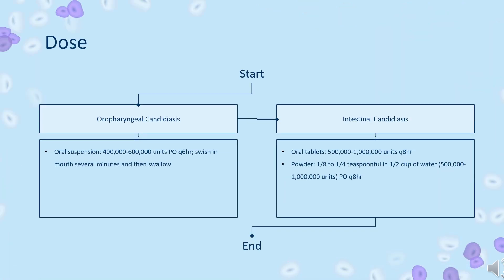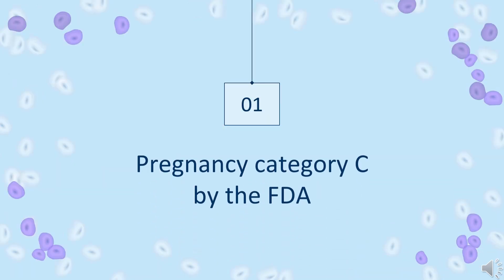Dose: Oropharyngeal candidiasis — Oral suspension: 400,000 to 600,000 units PO Q6HR; swish in mouth for several minutes and then swallow. Intestinal candidiasis — Oral tablets: 500,000 to 1 million units Q8HR. Powder: 1/8 to 1/4 teaspoonful in half a cup of water, 500,000 to 1 million units PO Q8HR.